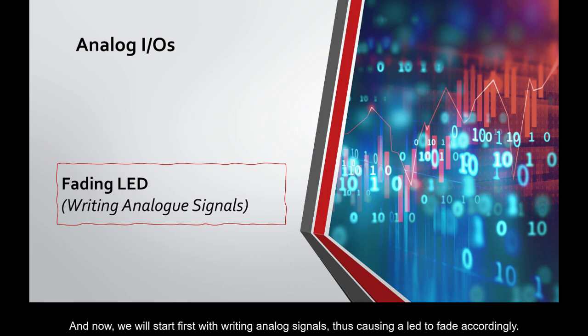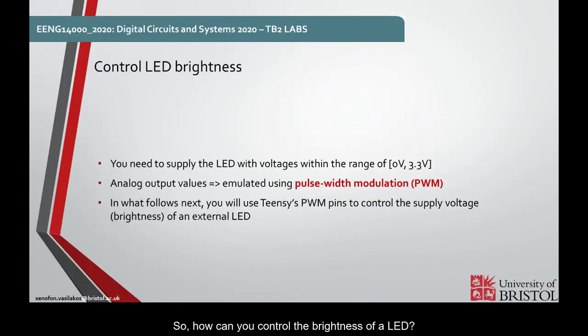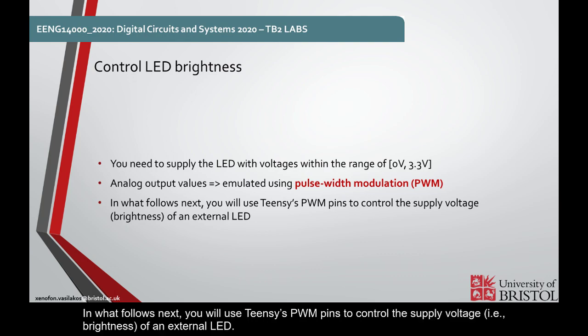And now, we will start first with writing analog signals, thus causing a LED to fade accordingly. How can you control the brightness of a LED? To do so, you need to supply the LED with voltages within the range of 0 to 3.3V. Analog output values in most microcontrollers can be emulated using Pulse Width Modulation, PWM. In what follows next, you will use Teensy's PWM pins to control the supply voltage, in other words the brightness, of an external LED.